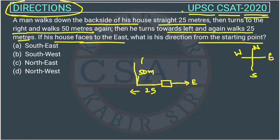He walks 50 meters and then turns toward the left. He was facing north, so turning left means he is now facing west. He then walks 25 meters again. If his house faces east, what is his direction from the starting point?